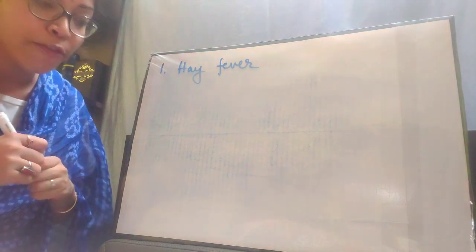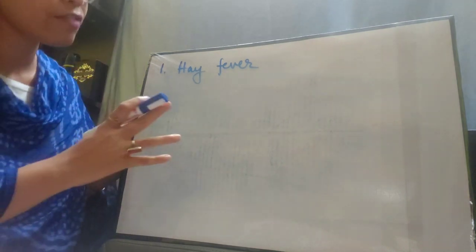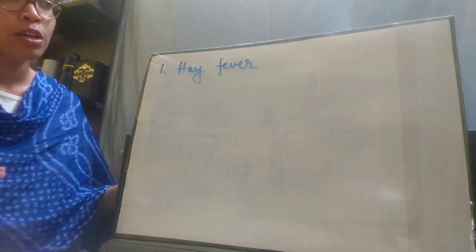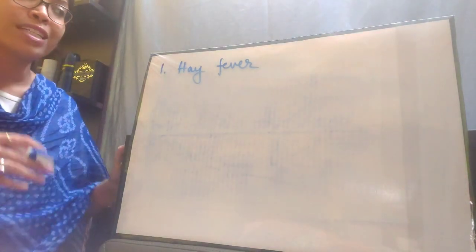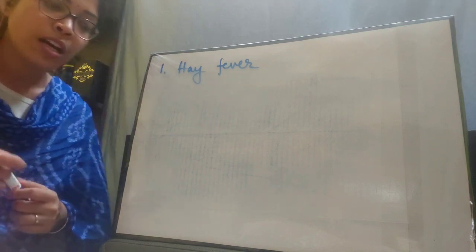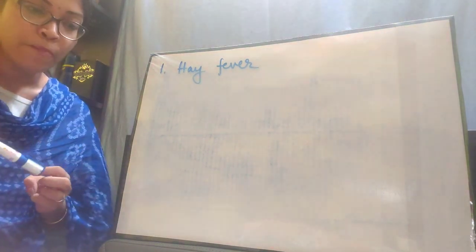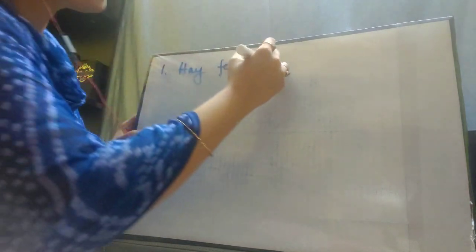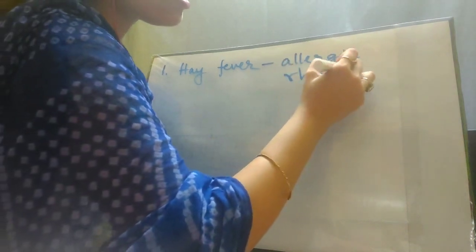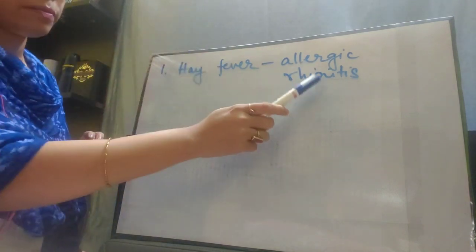In addition to pollen grains, hay fever can also be caused by the hairs of pet animals, dust mites, and molds. So hay fever can be caused by pollen grains of any plant, and apart from pollen grains, also by the hairs of pet animals we have at home, dust mites, and molds. The other name of hay fever is allergic rhinitis — this is very, very important. Allergic rhinitis is the other name of hay fever.